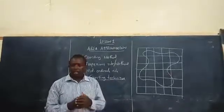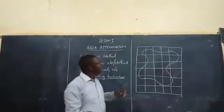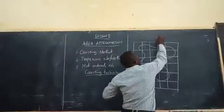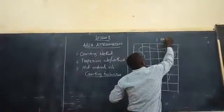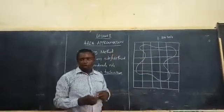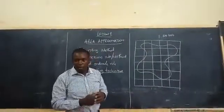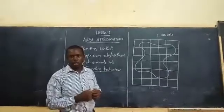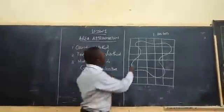And before we do that, we are taking an assumption that the scale for this object is 1 to 100,000. So we are going to count the number of full squares and also the incomplete squares.